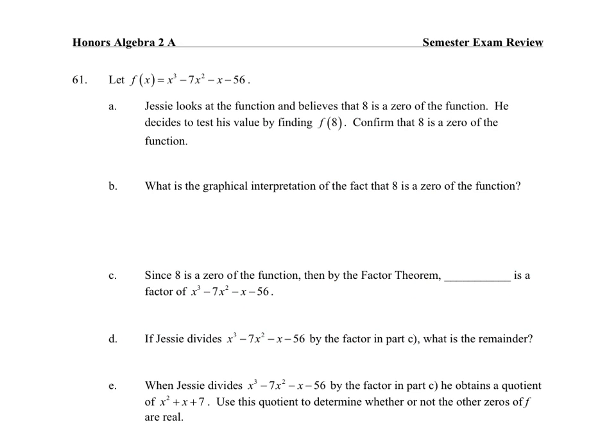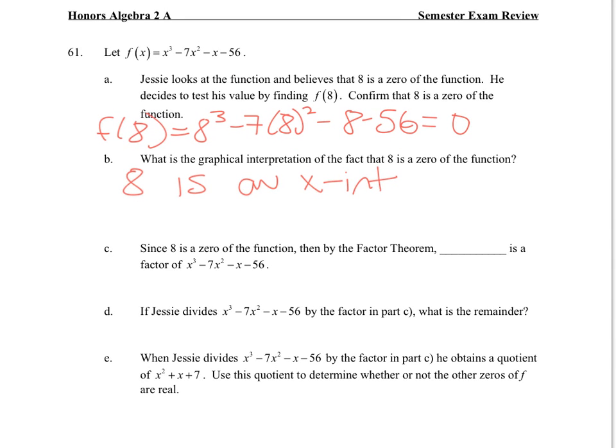Jesse looks at that function and believes that 8 is a zero. He decides to test his value by finding f(8). Does that equal 0? And it does. What is the graphical interpretation of the fact that 8 is a zero of the function? That means that 8 is an x-intercept. Since 8 is a zero, by the factor theorem, x - 8 is a factor.